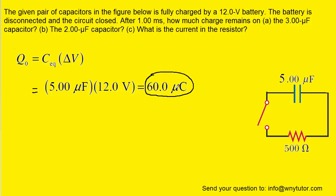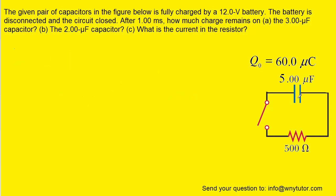Notice the unit of microcoulombs, because we plugged in microfarads for the capacitance. So we have this single equivalent capacitor whose total charge is 60 microcoulombs and total capacitance is 5 microfarads. This is all done before the switch was closed, keep in mind.